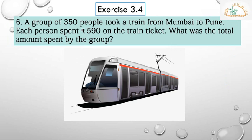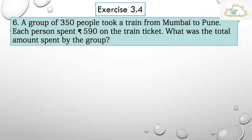Question 6: A group of 350 people took a train from Mumbai to Pune. Each person spent rupees 590 on the train ticket. What was the total amount spent by the group? There were 350 people on the train and each person paid rupees 590. We have to find the total amount spent by all 350 people.